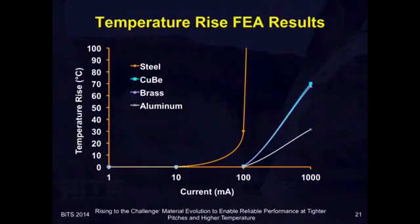The next thing we're going to study is temperature rise. We take the same FEA model used earlier for the stress and strain simulation, and now I'm running some electrical current through it. I'm going to make a simplifying assumption that we have the contact heat sinked at both ends, and we're going to neglect any convective or radiative heat transfer — which is reasonable when you have thousands of contacts crammed into a tiny space without much airflow.